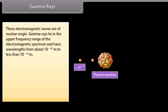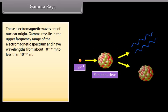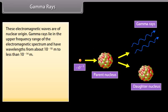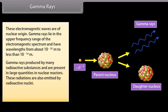Gamma rays. These electromagnetic waves are of nuclear origin. Gamma rays lie in the upper frequency range of the electromagnetic spectrum and have wavelengths from about 10 raised to the power minus 10 meter to less than 10 raised to the power minus 14 meter. Gamma rays produced by many radioactive substances and are present in large quantities in nuclear reactors. These radiations are also emitted by radioactive nuclei. They are used in medicine to destroy cancer cells.